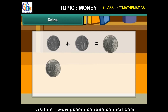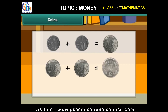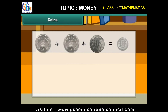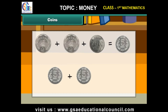Two 1 rupee coins make 2 rupees. Two 2 rupee coins and one 1 rupee coin make 5 rupees. Two 5 rupee coins make 10 rupees.